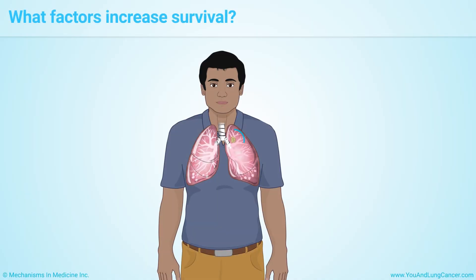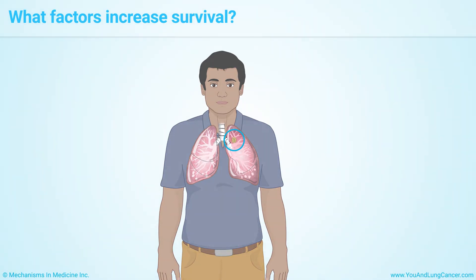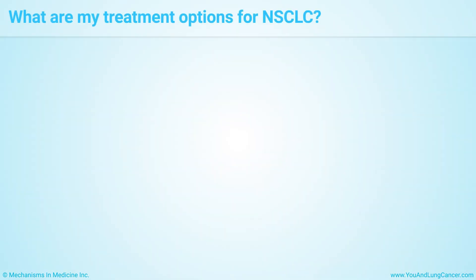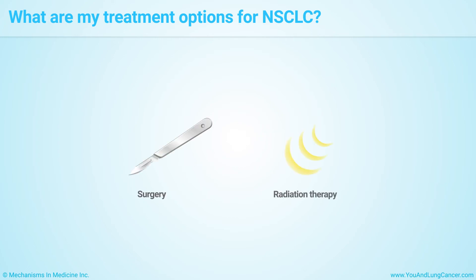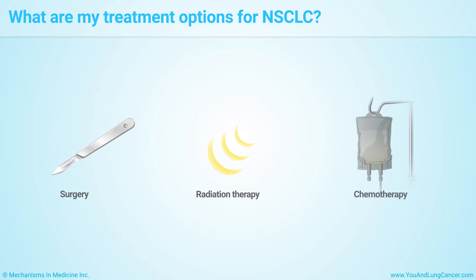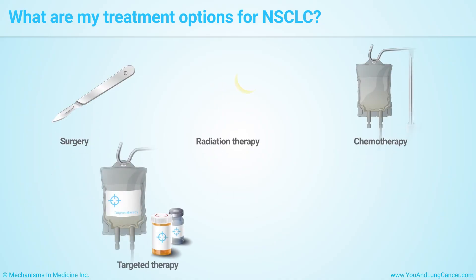Having a small cancer that hasn't spread outside the lung increases survival. The five basic ways to treat people with Non-Small Cell Lung Cancer are: surgery, radiation therapy, chemotherapy, targeted therapy, and immunotherapy.